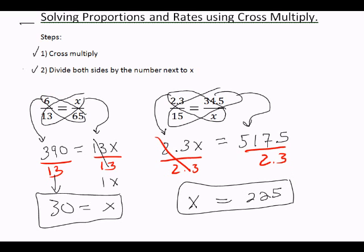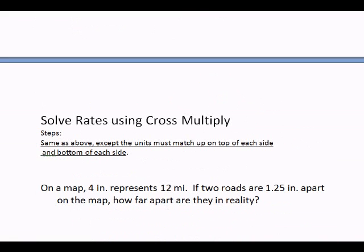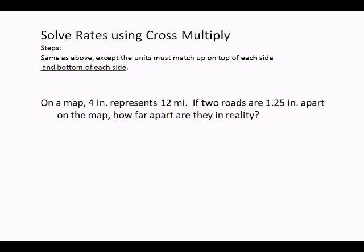This is solving proportions. Okay, next I'm going to solve rates. And so rates are a little bit different. In order to use cross-multiply to solve rates, the steps are the same as above, except the units must match up on the top of each fraction and on the bottoms of each fraction.